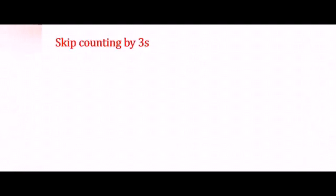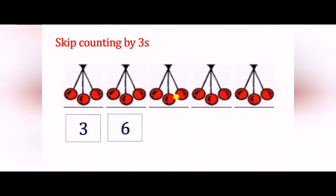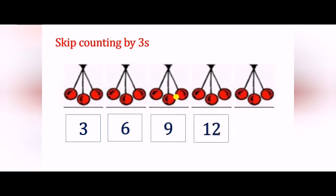Now let's look at skip counting by 3s. Here are cherries grouped in 3s. Let's count these cherries in sets of 3. We will start from 3: 3, 6, 9, 12 and 15.